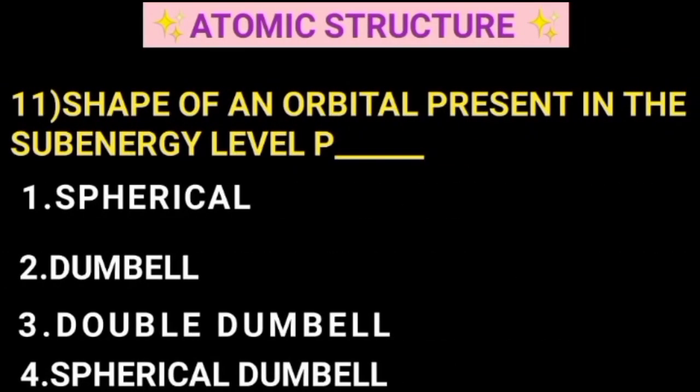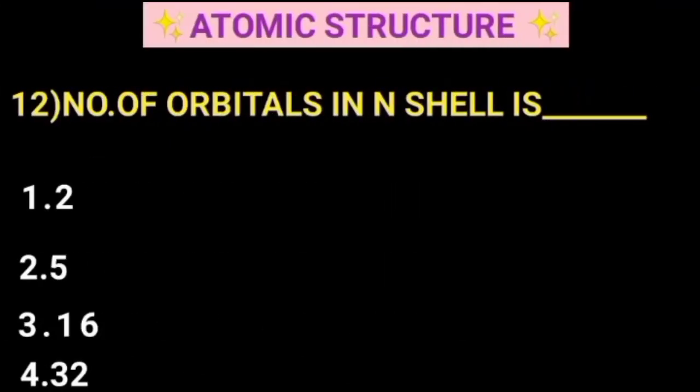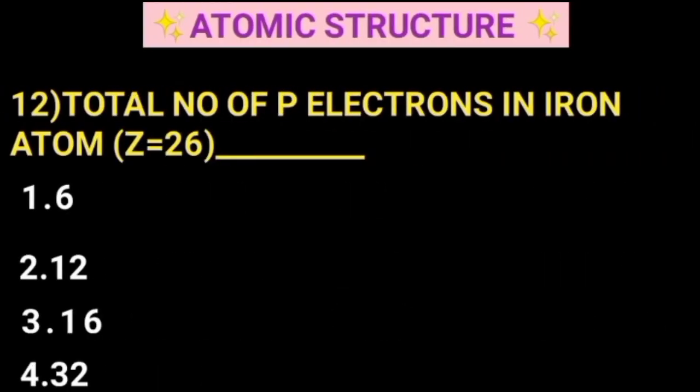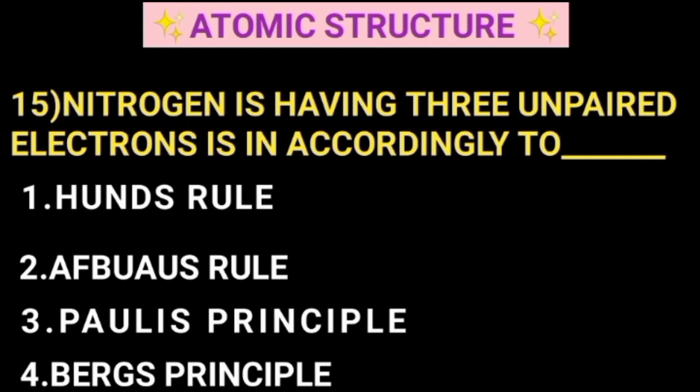The shape of an orbital present in the sub-energy level P. The number of orbitals in N shell is. Total number of unpaired electrons in iron atom. The lightest particle is. In the comment section, you need to write it in the comment section so that you can find everything you want. Nitrogen is having 3 unpaired electrons accordingly to.